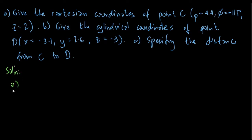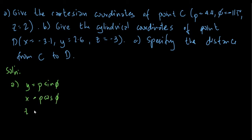First we will go to part A. We need to convert the given coordinates, which are in cylindrical coordinates, into Cartesian or rectangular coordinates. Going back to our formula: Y is equal to rho sine phi, X is equal to rho cosine phi, and Z is equal to Z. By the given, our Z is equal to 2, so we have the first answer. We just need to find Y and X.